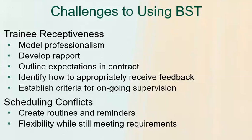Outline your expectations in your contract. If there are expectations about how feedback should be received, spell it out — identify exactly what that looks like. Things we've defined include maintaining a neutral facial expression, asking clarifying questions using a neutral vocal tone, and being aware of body language. Crossed arms and hands on hips can be interpreted as less receptive to feedback compared to having your arms down or in your lap.